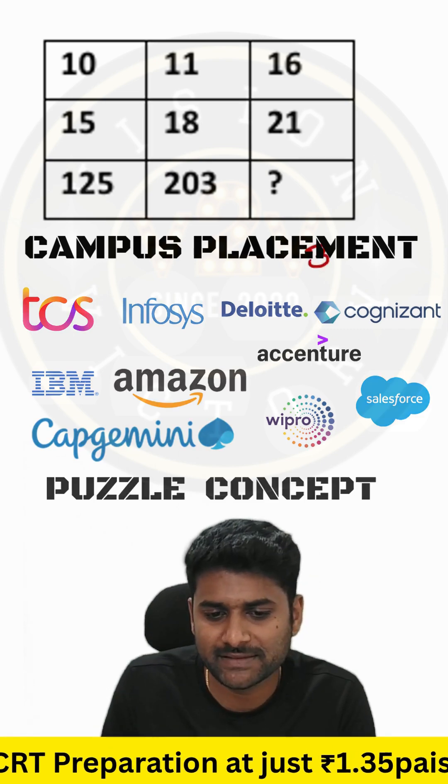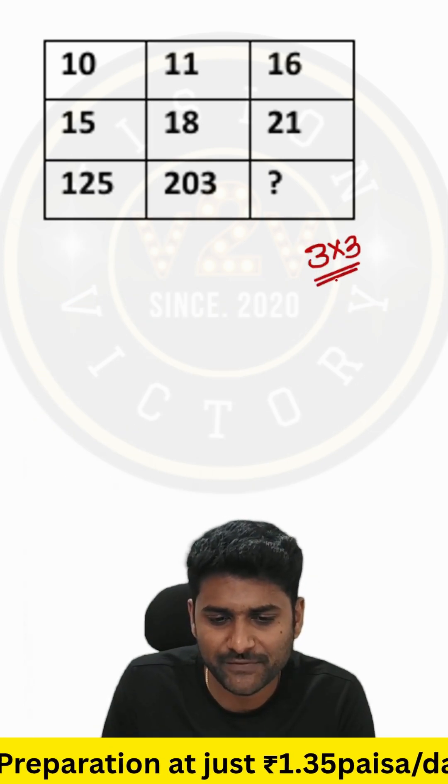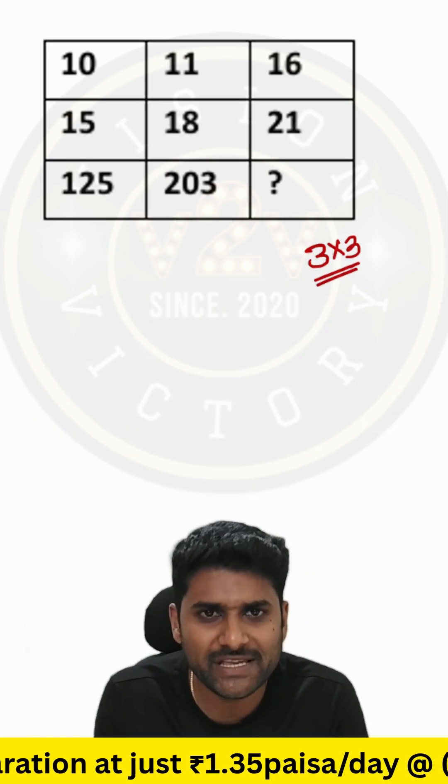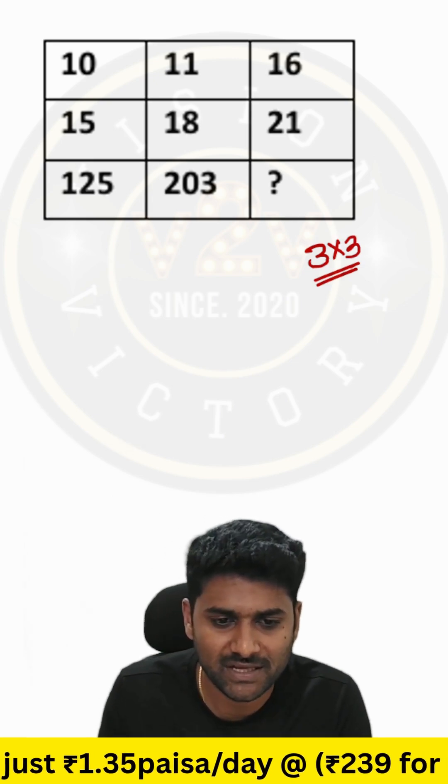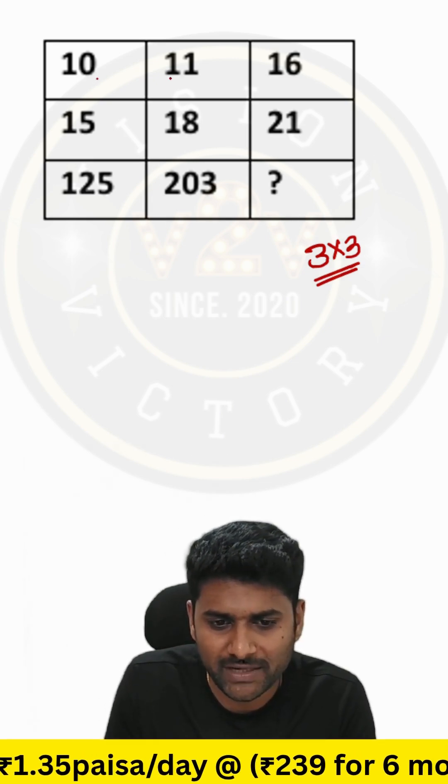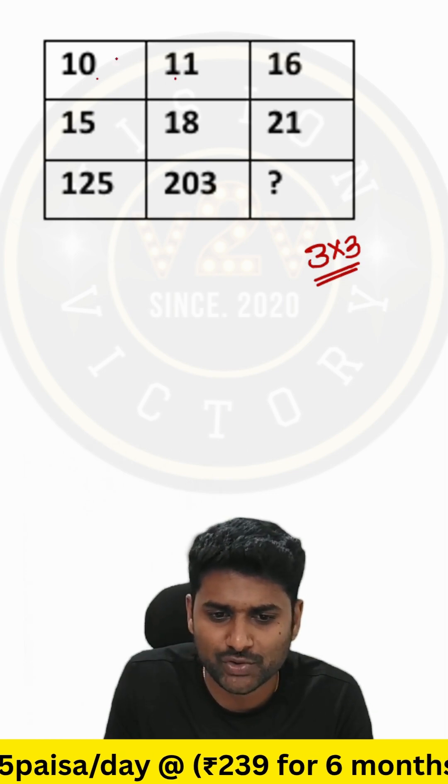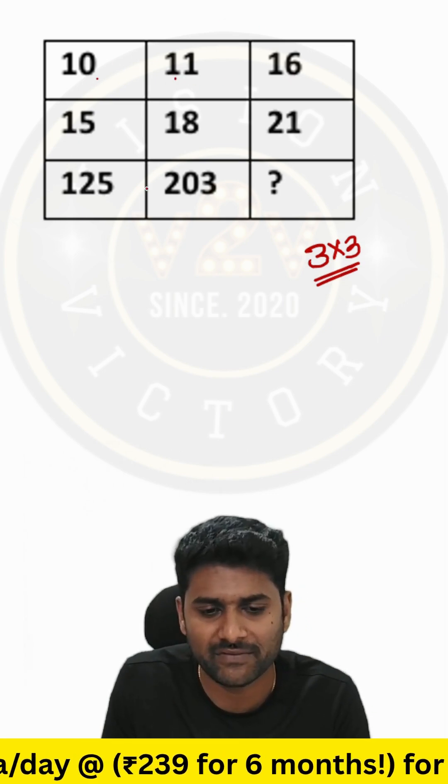Now see, it's all about the 3 by 3 grid. If you see the 3 by 3 grid, use any two boxes and it will give the resultant of the third box. For example, you can go 10, 11, maybe 16 - use 10 and 11, maybe you will get 16.